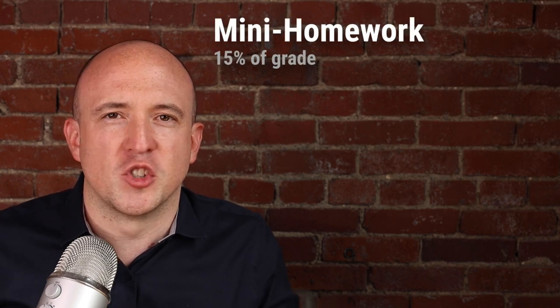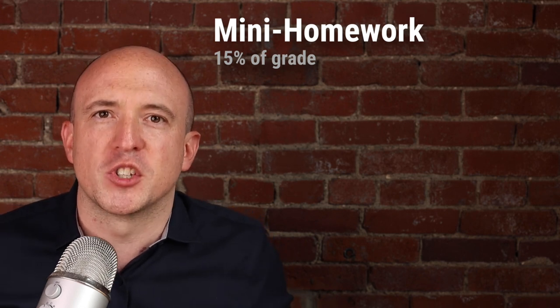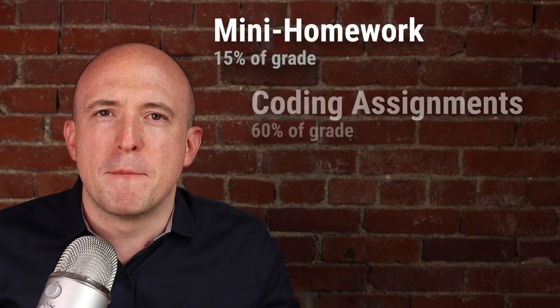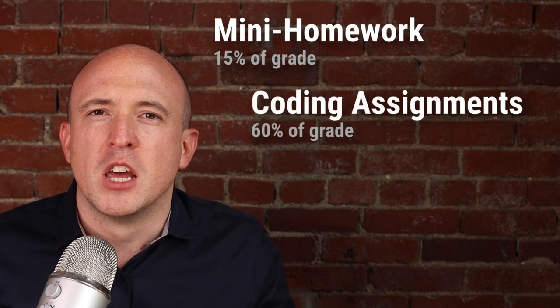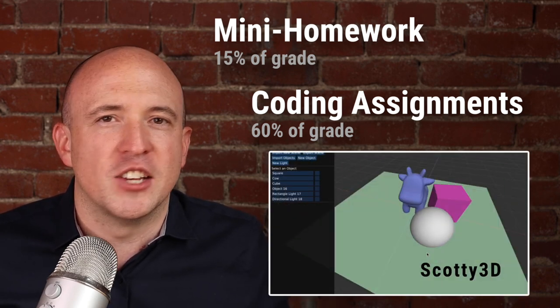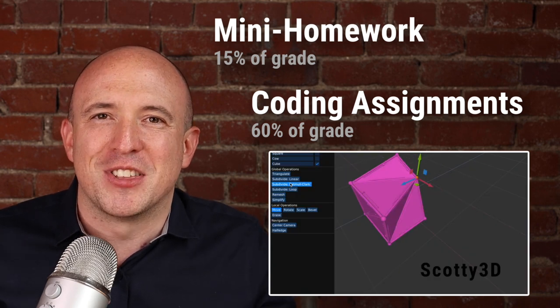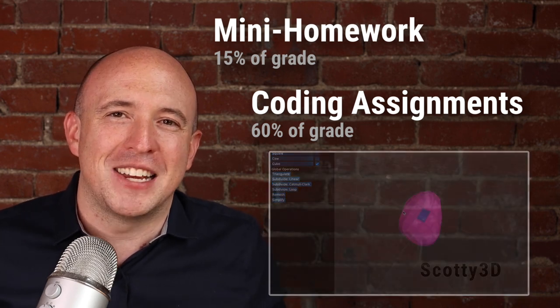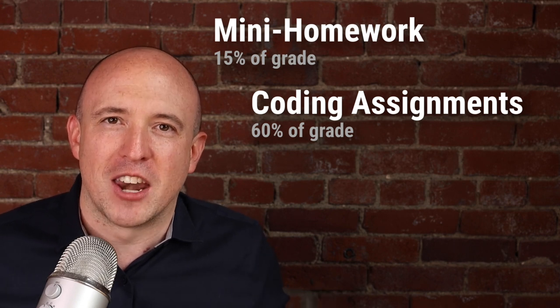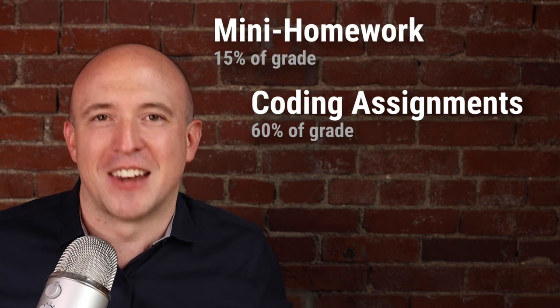In terms of work for this course, there are three main things. First, mini homeworks — just two or three questions asked after each lecture to make sure you understand what's going on. Second, four major coding assignments where over the course of the semester you'll build up a 3D package called Scotty 3D. Just like any modern 3D package, it has modeling, rendering, and animation — but all of the key routines have been stripped out for you to fill in, so you can create really cool models and animations.